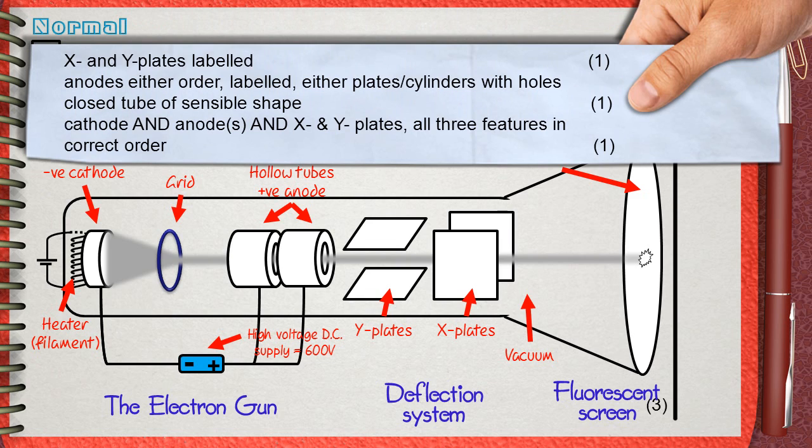X and Y plates labeled, this is one mark. The second mark is for the anodes. There are other accepted shapes, but the correct shape is drawing them as hollow tubes.